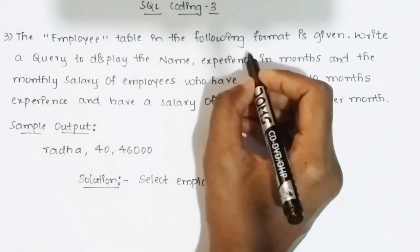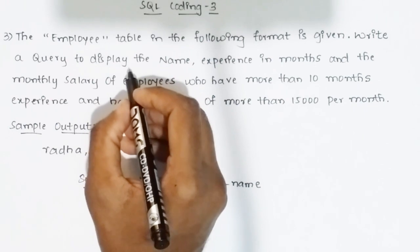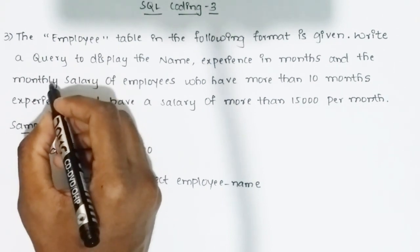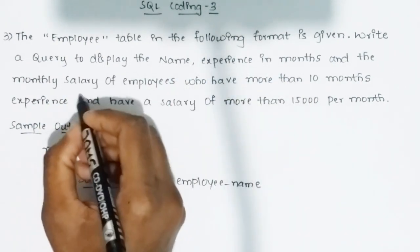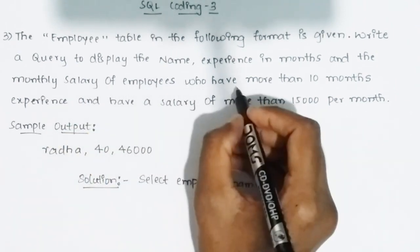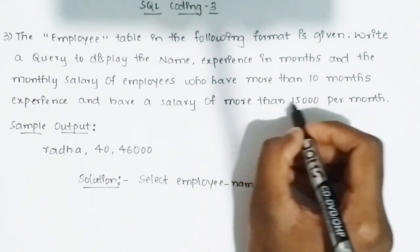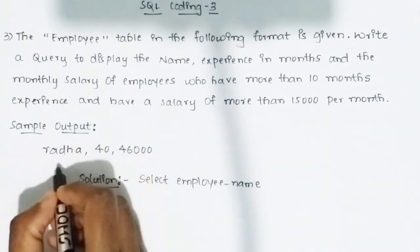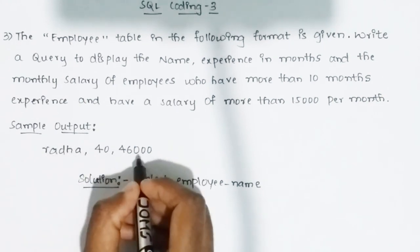The employee table in the following format is given. The question is: write a query to display the employee name, experience in months, and the monthly salary of employees who have more than 10 months of experience and have a salary more than 15,000 per month.